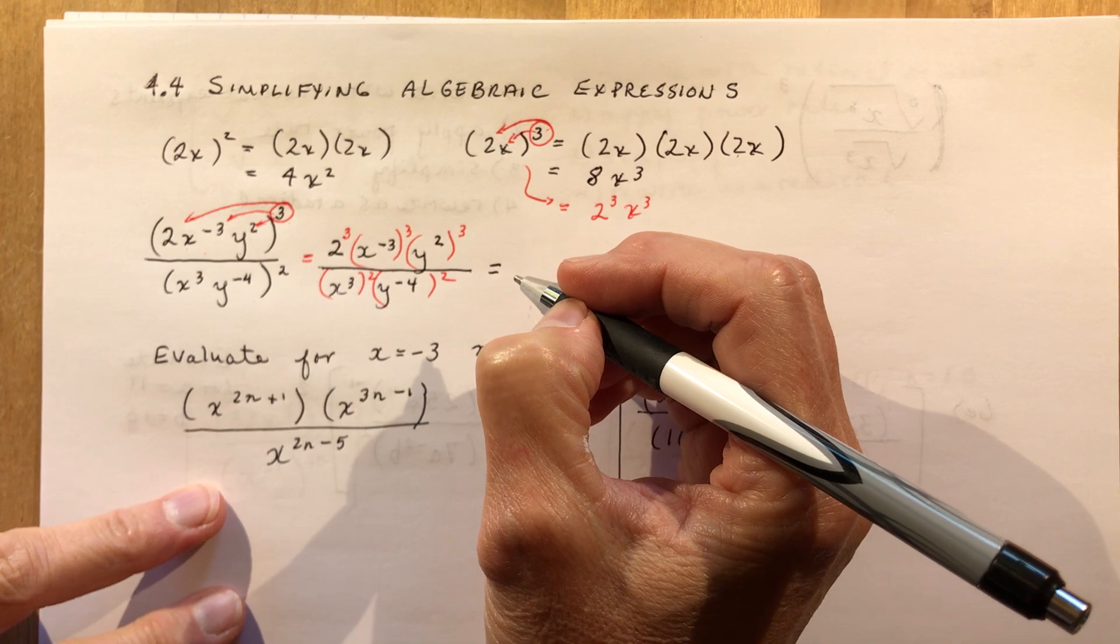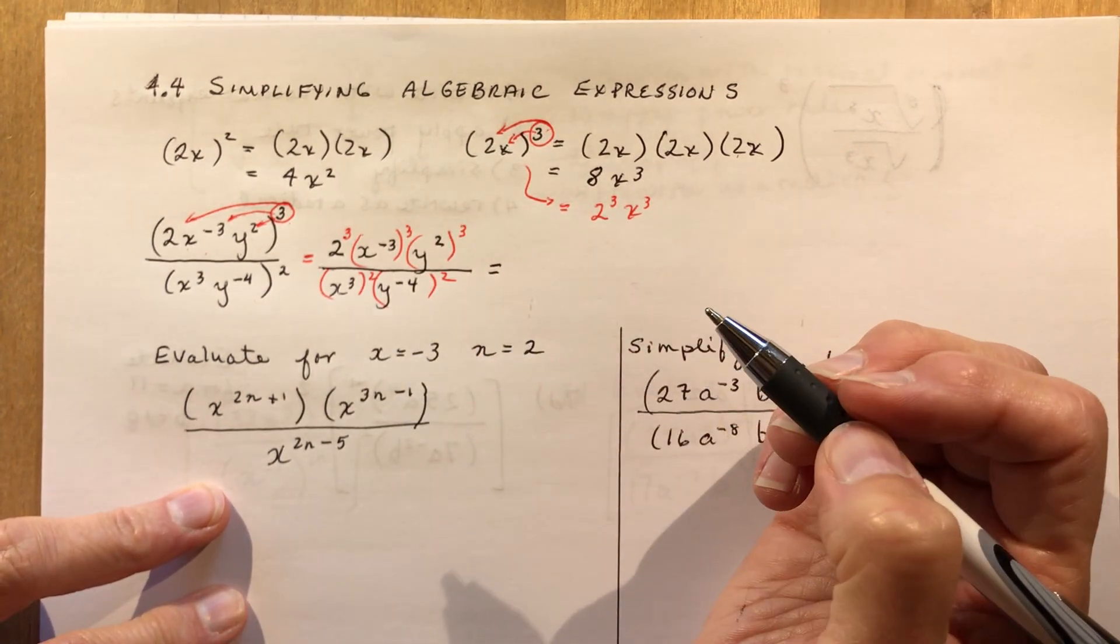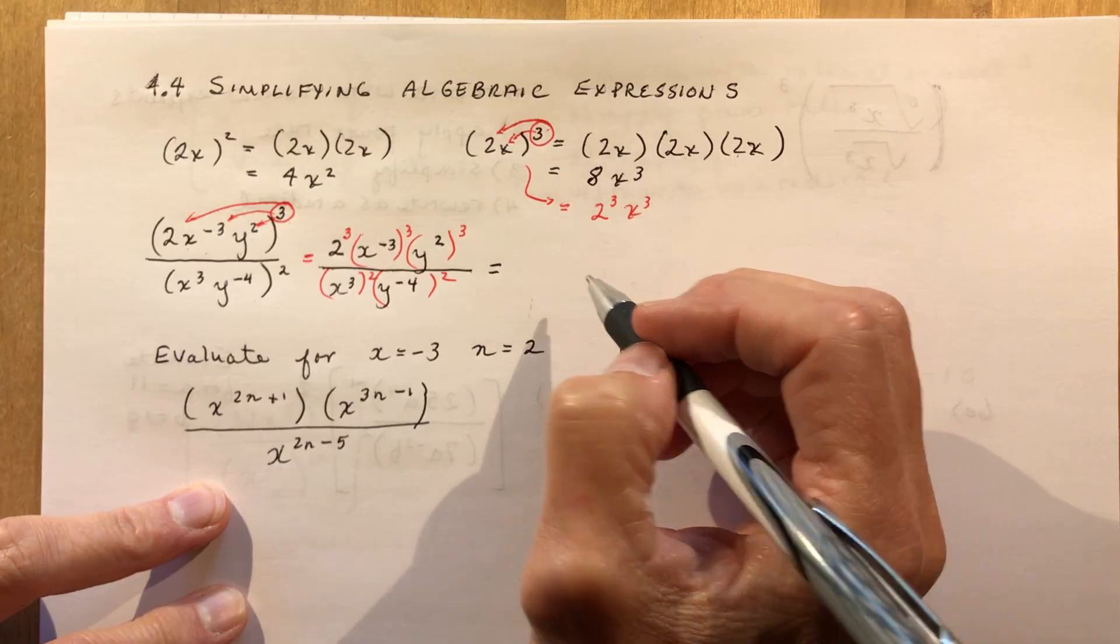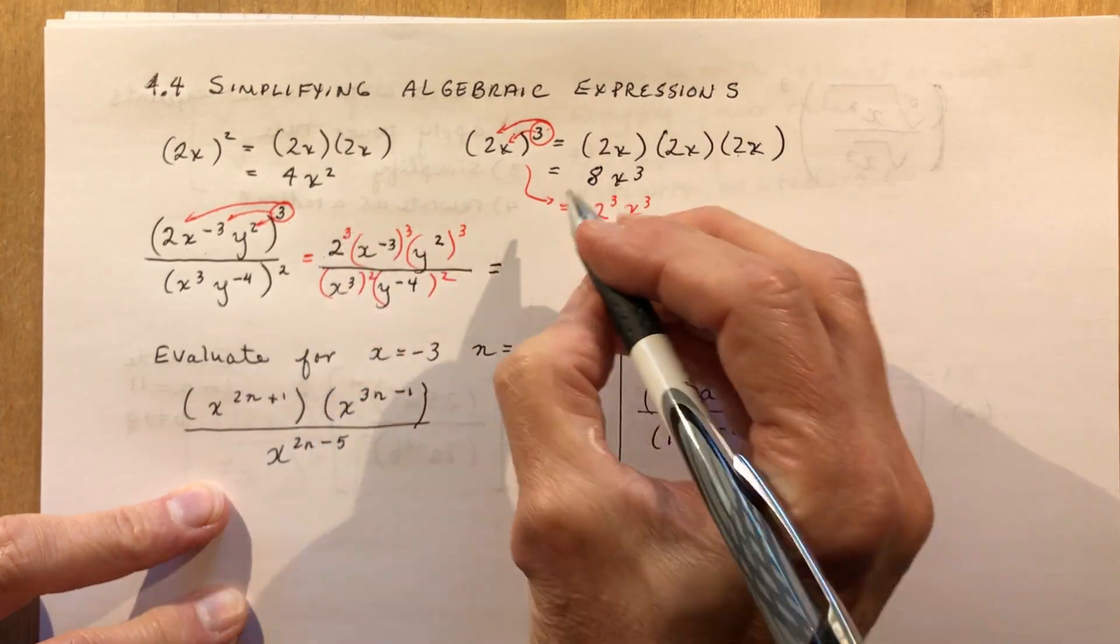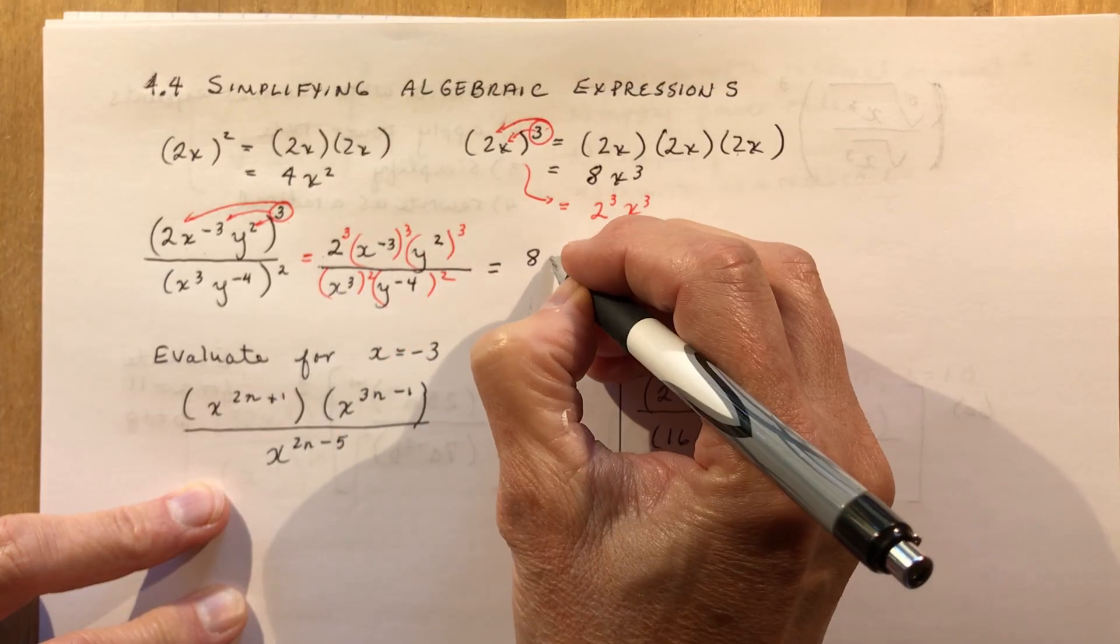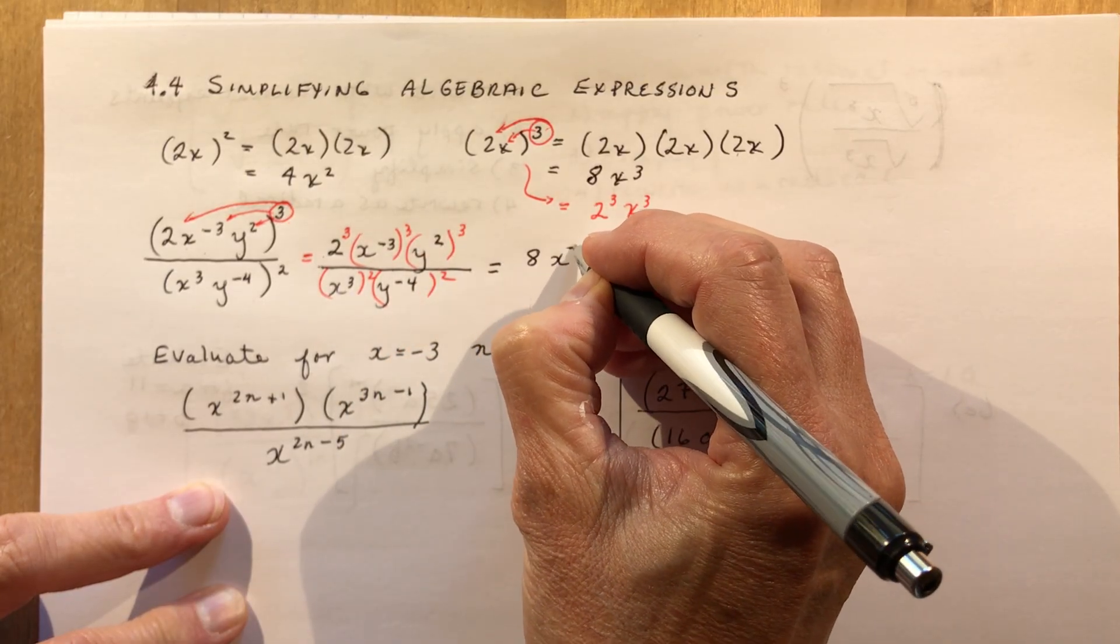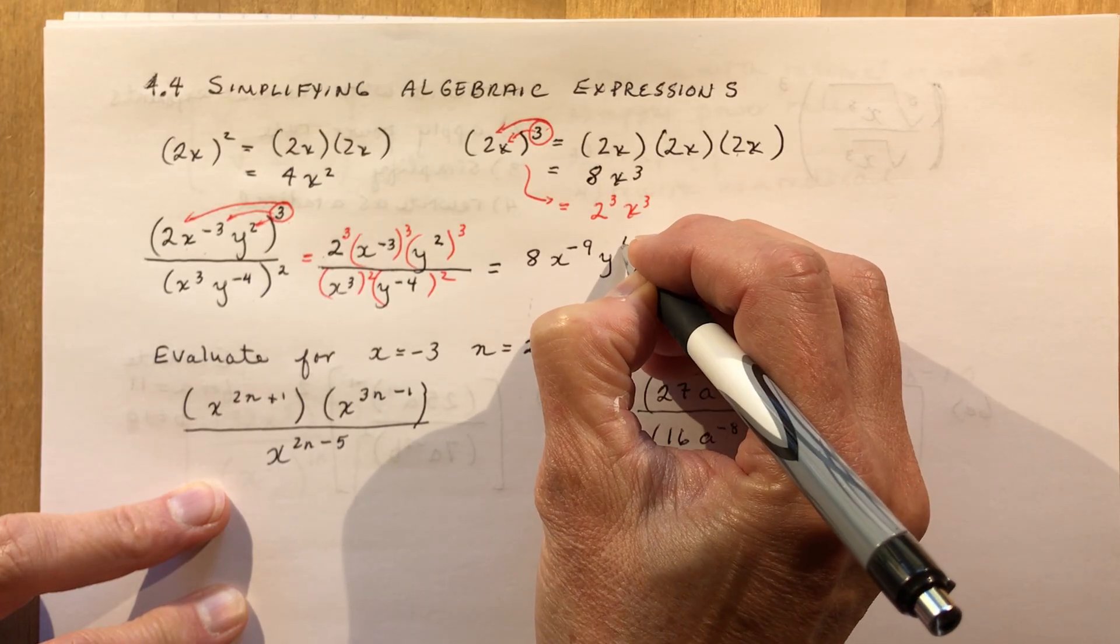And I'm breaking one of my cardinal rules with my students. Never do your math homework in ink. It's just that it's a little easier for you to see if I do it in pen than if I did it in pencil. So now you can see that I have each of these to the power of 3. So 2 cubed is just 8. x to the minus 3 cubed is x to the 3 times minus 3 is minus 9, and y squared cubed is y to the power of 6.